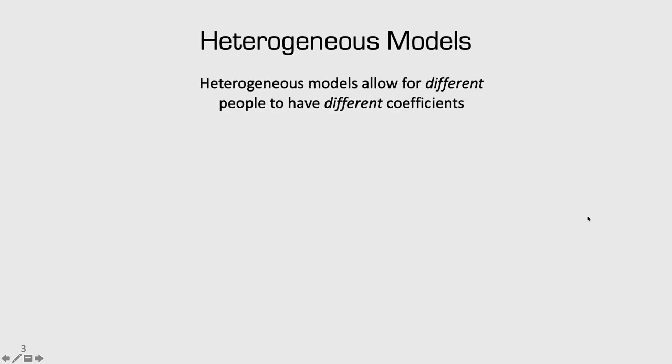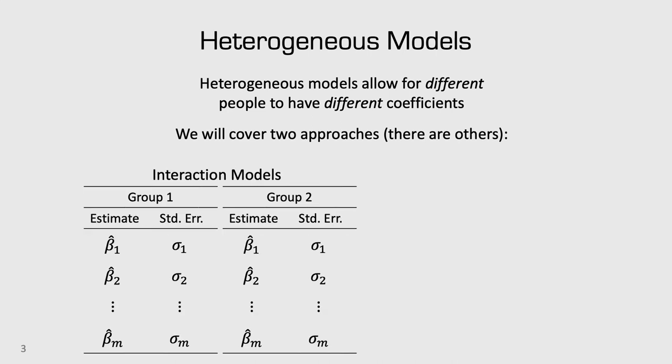For heterogeneous models, this allows different people to have different types of coefficients. In this class, we'll cover two different approaches. The most extreme thing you could do is run a separate model for every single person, but that usually isn't feasible because we often don't have enough information about each person. Our utility models might have 10 or more coefficients, yet each respondent might have only answered a few choice questions. So instead, one thing we can do is group people together and estimate different models for different groups, getting one set of coefficients for group 1 and another for group 2.